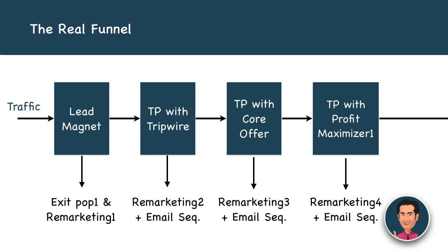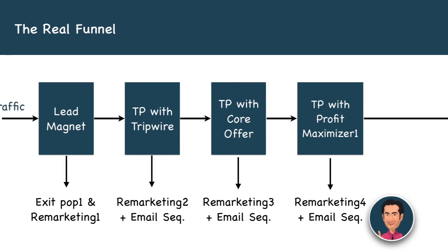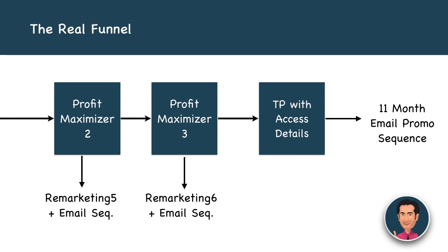Remarket on Google Display Network, Facebook, or Twitter — all support remarketing. Don't show the same ad everywhere; show case studies of people helped by that core offer, or happy customer testimonials. That's very important. Once you've done that, you go to the thank-you page with profit maximizers — OTOs. You could have profit maximizer one, two, and three. Similarly, you'll have remarketing ads and email sequences done for each one of them.